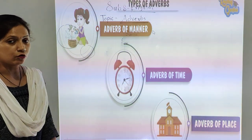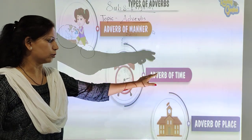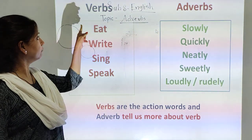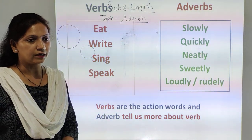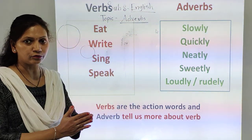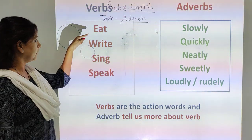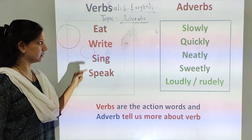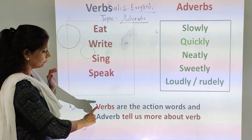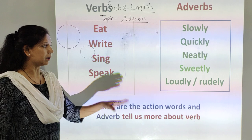Types of adverbs. What are adverbs? Adverbs of manners, adverbs of time, and adverbs of place. Next is verbs. Before I teach you about adverbs, we have to revise some action words. You can see here: eat, write, sing, speak — these are the action words. Verbs are the action words, and adverbs tell more about the verbs.